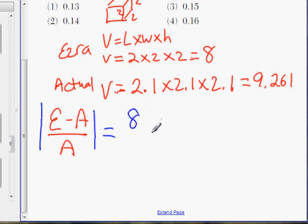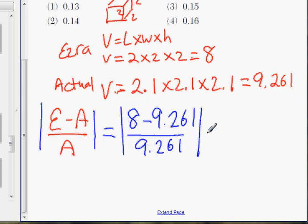Ezra's measurement is 8. The actual measurement is 9.261, divided by 9.261. You put this in a calculator. 8 minus 9.261 is going to be negative 1.261 divided by 9.261.